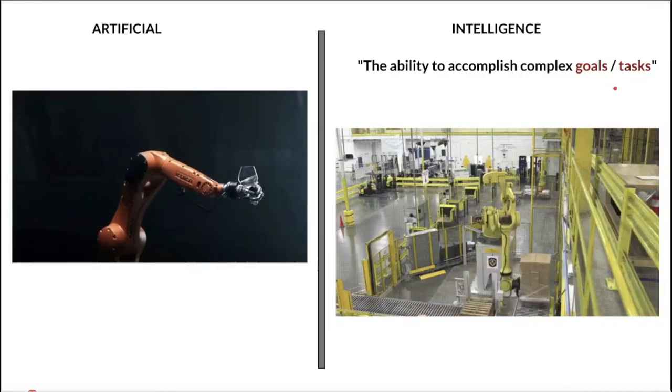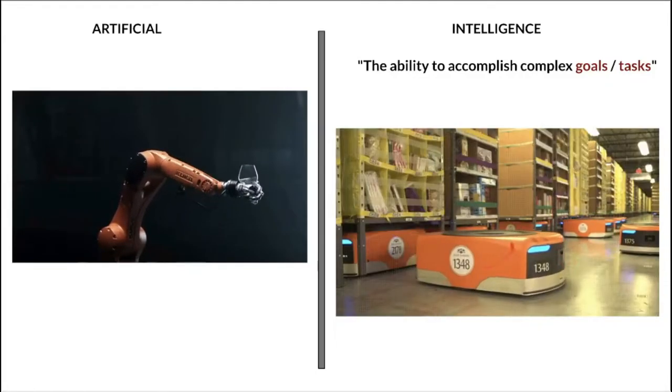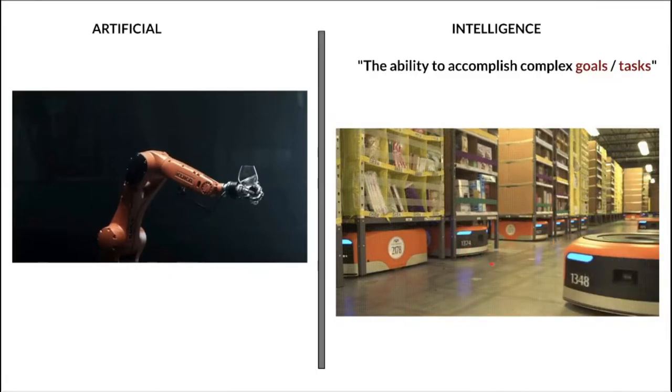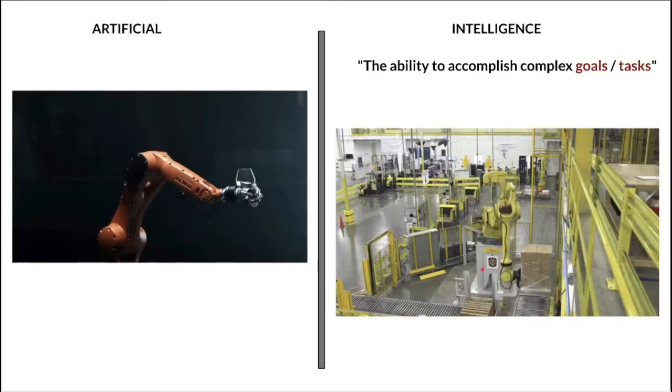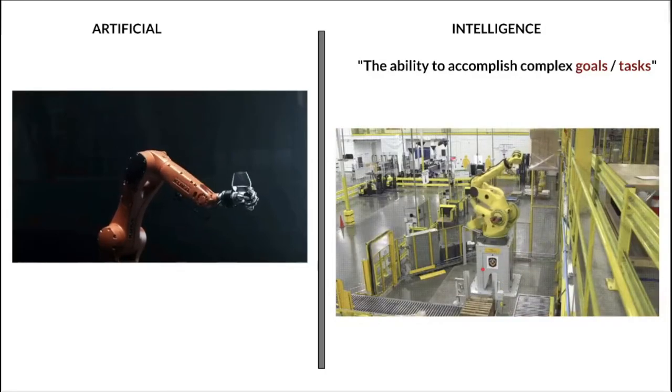Let's see some examples. Here you can see the AMR robots which are used in inventory for sorting packages. They are able to accomplish complex goals and tasks.